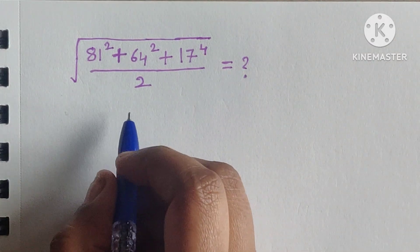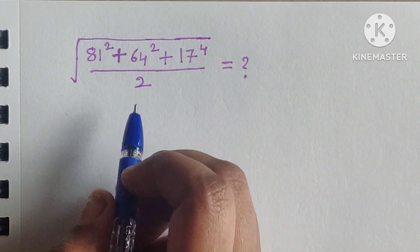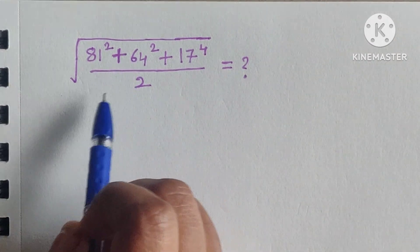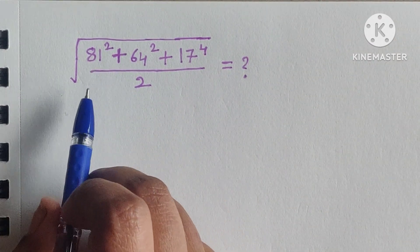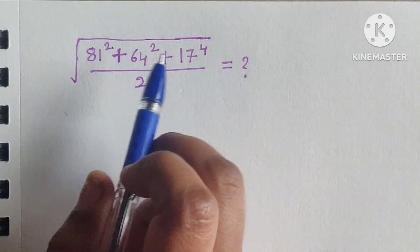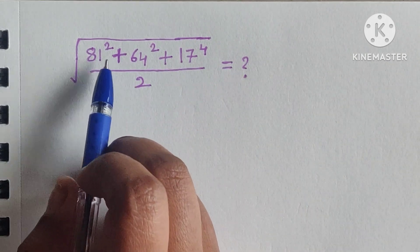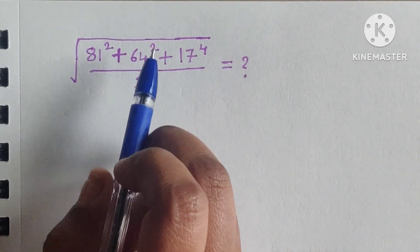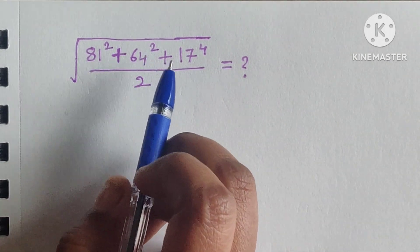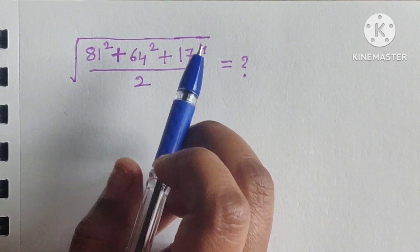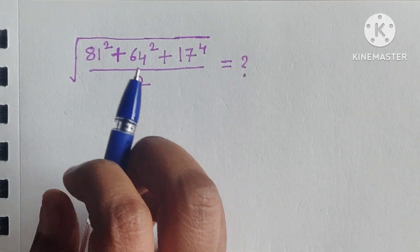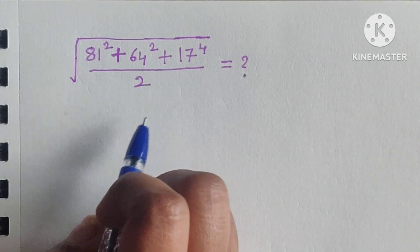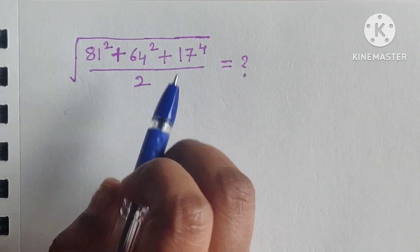Hello everyone, welcome back to our channel. Here we have one problem: the square root of 81 squared plus 64 squared plus 17 to the power of 4, divided by 2. How do we solve this problem?